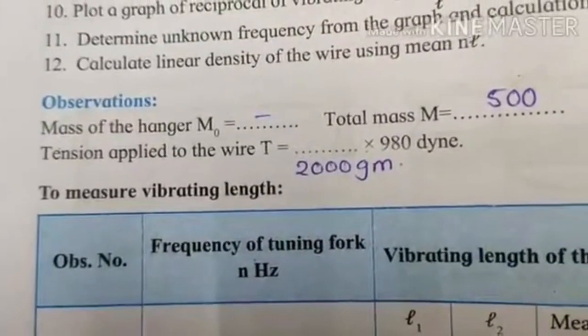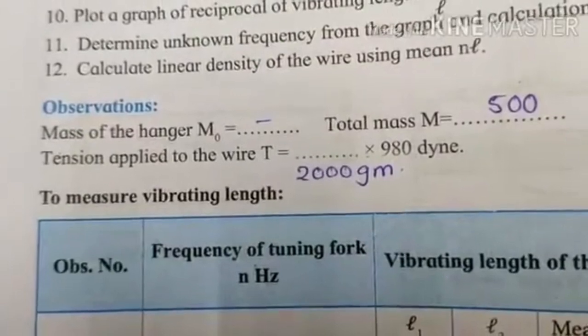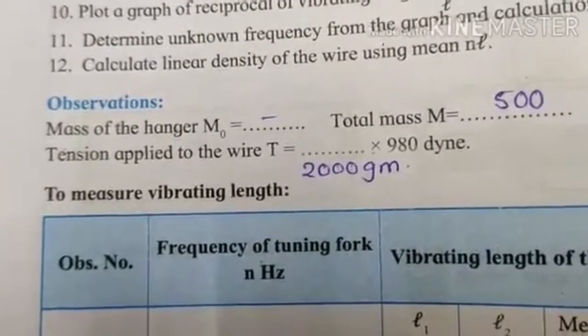The second is tension applied to the wire T is equal to 2000 gram into 980 dyne.